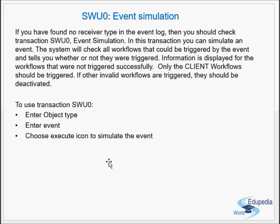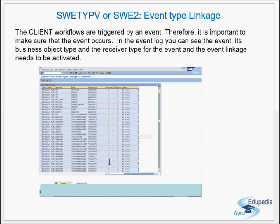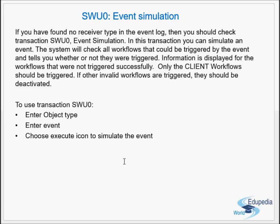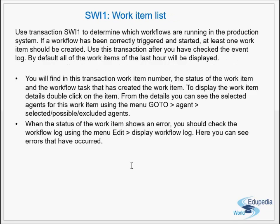Information is displayed for workflows that were not triggered successfully. Only the client workflows should be triggered; if other invalid workflows are triggered, they should be deactivated. In SWE2 you check which workflows are required for an event — activate only those and deactivate the others. To use SWU0, you enter the object type, the event, and execute the icon to simulate the event.